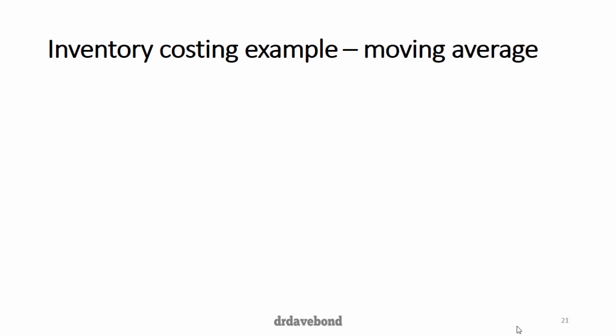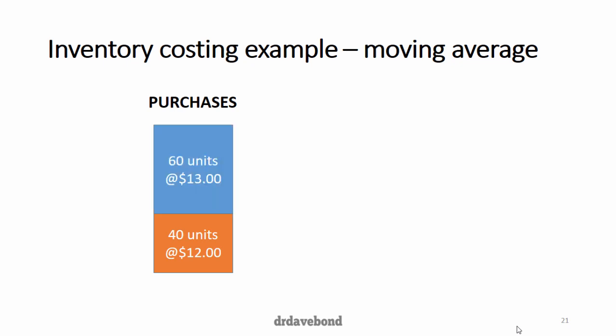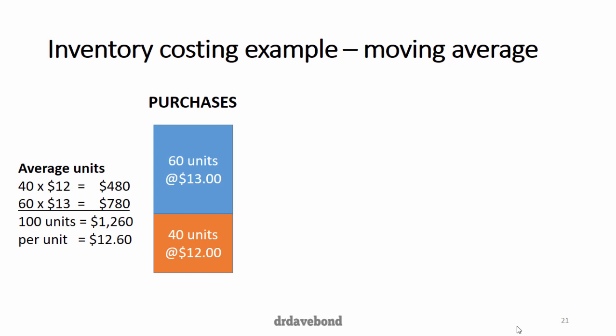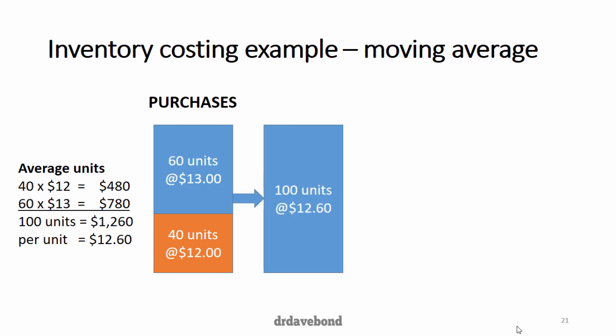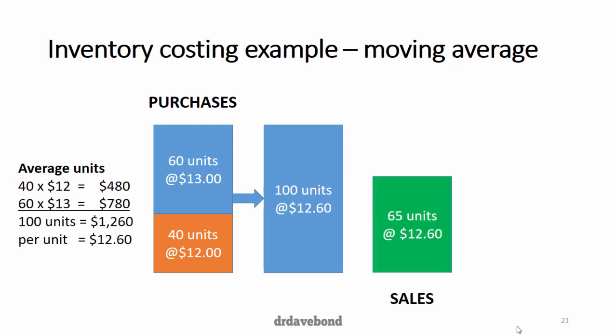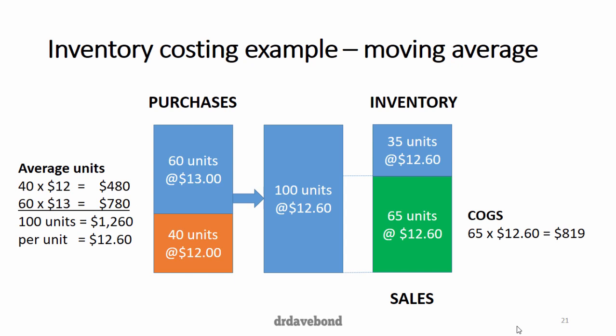Under the moving average (or weighted average) method, after the 40 units and 60 units are added, we calculate the average price per unit: $12.60. It's as if we have a pool of 100 units all at $12.60. When 65 units are sold, 65 times $12.60 gives cost of goods sold of $819. The remaining 35 units at $12.60 gives closing inventory of $441.